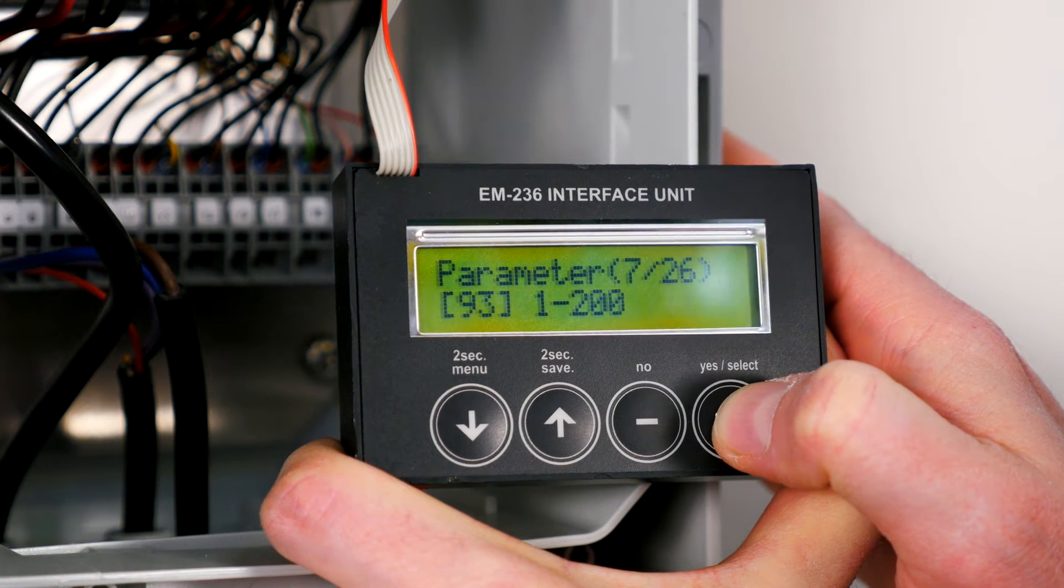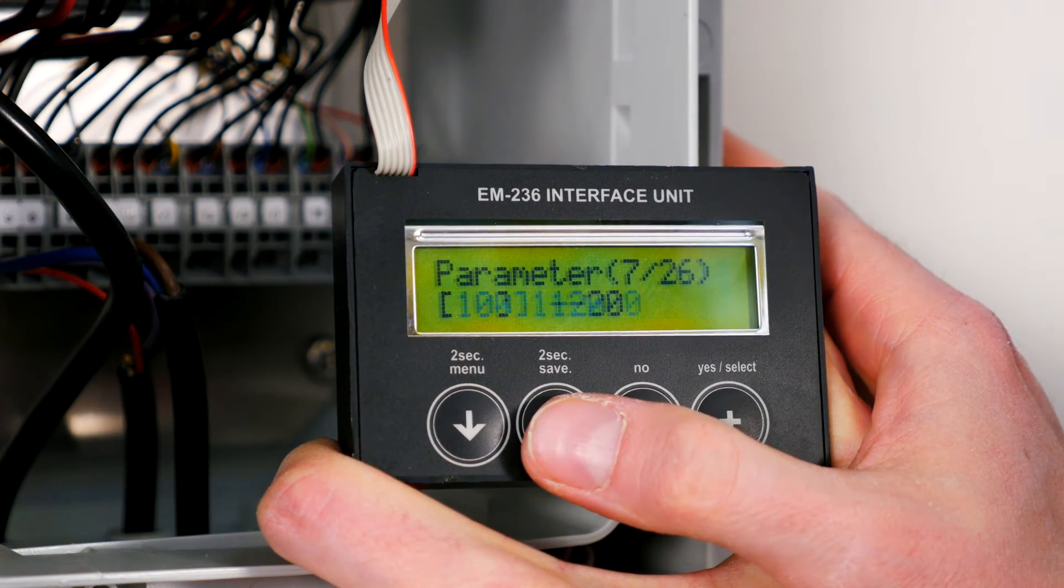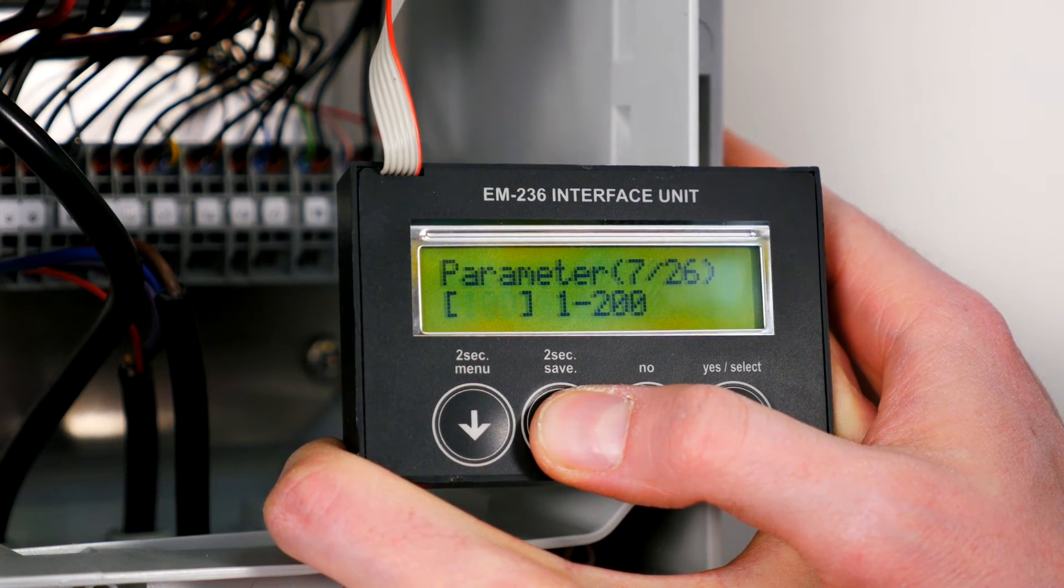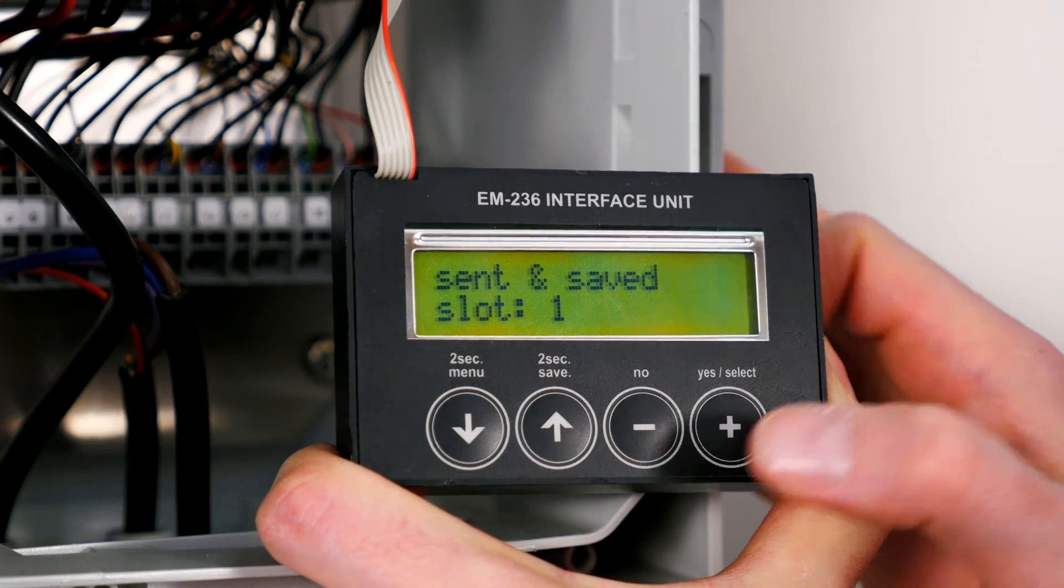If the parameters are changed, they are saved by holding down arrow up for 2 seconds. Hereafter, the display will show save slot 1.